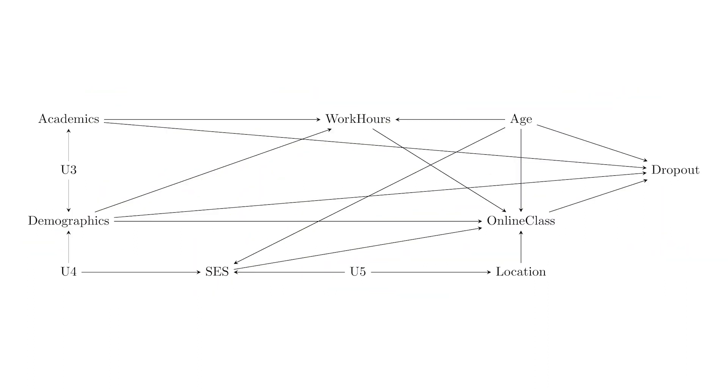For example, if we have demographic characteristics like socioeconomic status, gender, and race — and from the point of view of our research question they all occupy the same space on the diagram — we can pop them together and call it our 'demographics' variable. We've simplified from three variables to just one, making our presentation a lot easier. Later, when we actually use the diagram, we'll remember that demographics represents all those things packaged together.